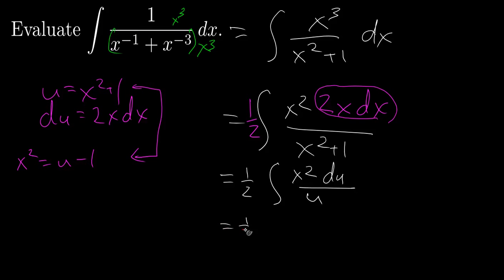So I can rewrite this as 1 half the integral u minus 1 du over u. And I'll split up this fraction so that I'm going to be integrating 1 minus 1 over u du.